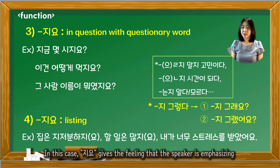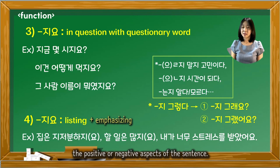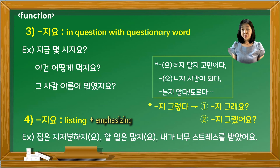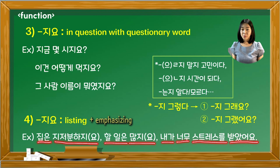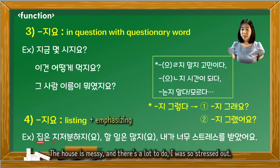In this case, 지요 gives the feeling that the speaker is emphasizing the positive or negative aspects of the sentence. For example: 집은 지저분하지요, 할 일은 많지요, 내가 너무 스트레스를 받았어요. — The house is messy, and there's a lot to do, I was so stressed out.